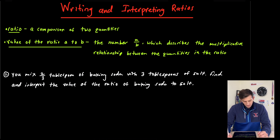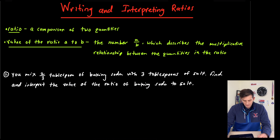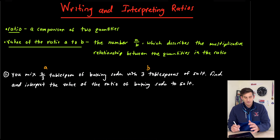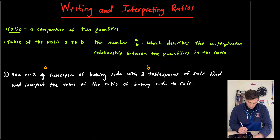So let's look at an example. It says we mix two-thirds tablespoon of baking soda with three tablespoons of salt. Find and interpret the value of the ratio of baking soda to salt. So baking soda to salt — this was our baking soda and this was our salt — so we have two-thirds to three. Our ratio would be two-thirds to three.